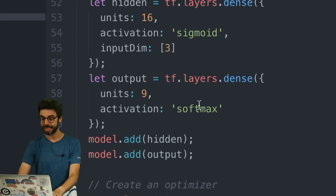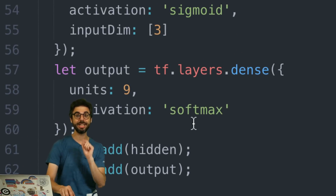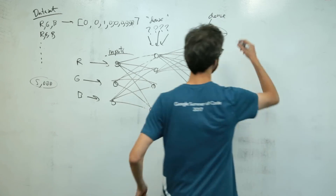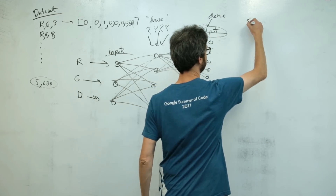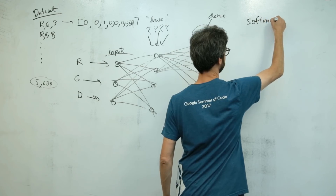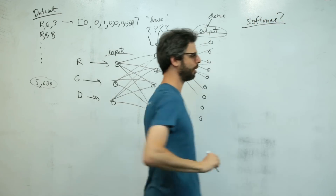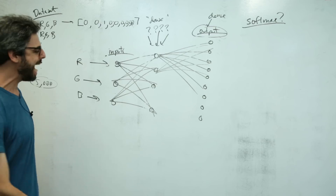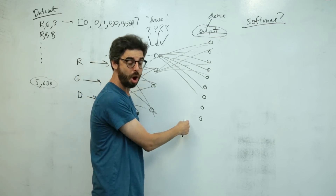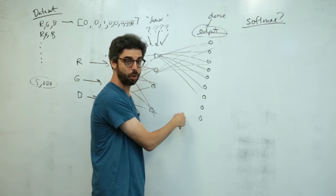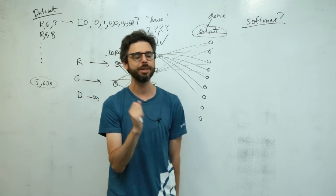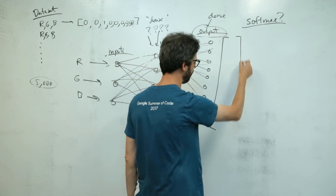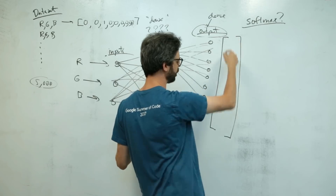The reason it's going to change is because I am using an activation function called softmax. So let's talk about what softmax is. The output that we want from the neural network is a probability distribution. What's an example of what an output might look like?